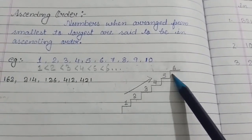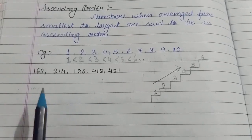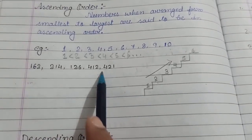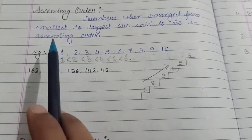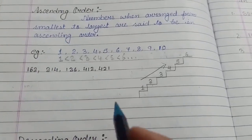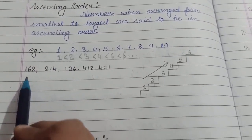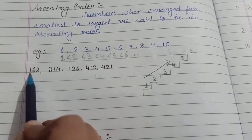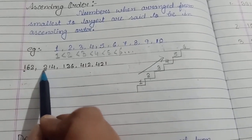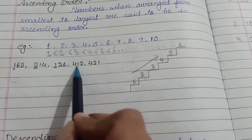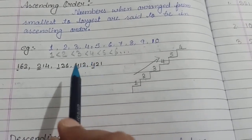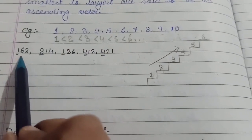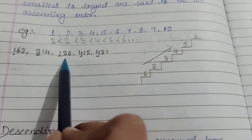If you have understood, then we will try to solve this. Here we have to compare the numbers and find out the smallest number. To find out the smallest number, we will see the number which are at the hundreds place. Here 1 is at hundreds place, here 2, here 1, here 4 and here also 4. We can see 1 is the smallest number but 2 numbers are starting with 1.